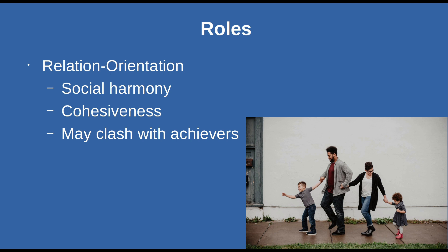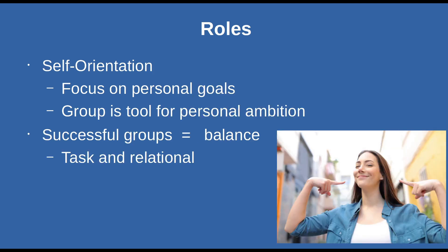Relation-oriented individuals focus on making sure people are happy, but they might sacrifice achieving group goals, which can lead to frustration. The last orientation is self-orientation — people focused on their own personal goals who see groups as a tool for achieving their own ambitions. This is considered the most unhealthy orientation. As you try to build successful groups, you want to find a balance between task-oriented and relational-oriented individuals, and try to exclude self-oriented individuals because they're not really team players.